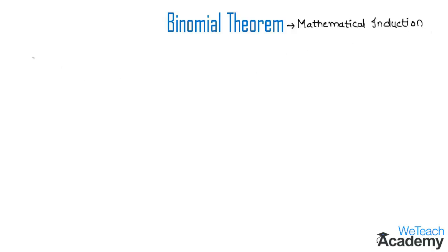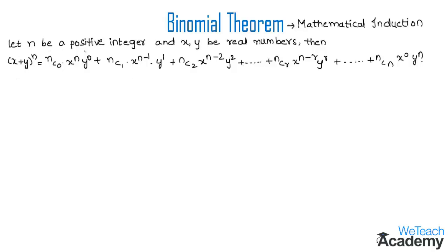The statement of the binomial theorem is: let n be a positive integer and x, y be real numbers. Then (x + y)^n = nC0 · x^n · y^0 + nC1 · x^(n-1) · y^1 + nC2 · x^(n-2) · y^2 + ... + nCr · x^(n-r) · y^r + ... + nCn · x^0 · y^n. Let us call this equation 1.